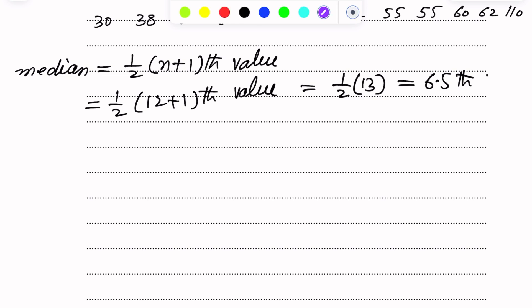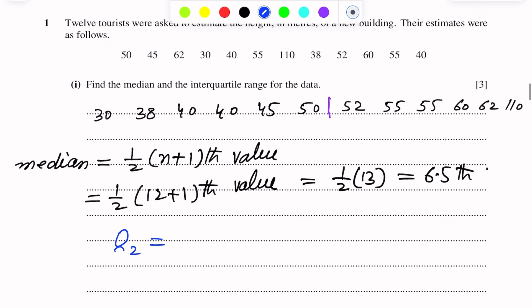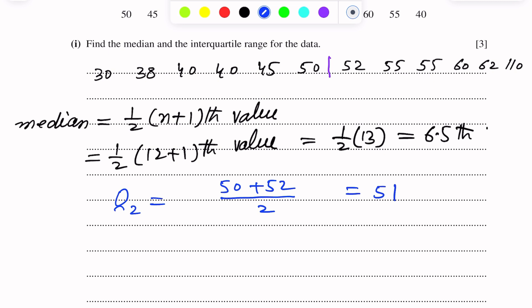We denote the median as Q2. Since the 6.5th position is the midpoint of 50 and 52, we find their mean. Median = (50 + 52) / 2 = 51. So the median is 51.